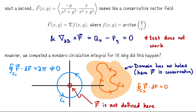I just want to mention that our test for conservative vector fields is a good one, so long as the domain you're working in does not contain any holes. If you're looking at a vector field defined on all of R2 or all of R3, then the test we have will detect if it's a conservative vector field, and then you can apply the fundamental theorem for line integrals.